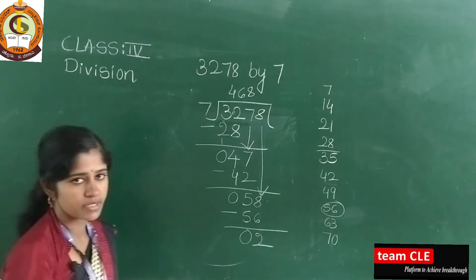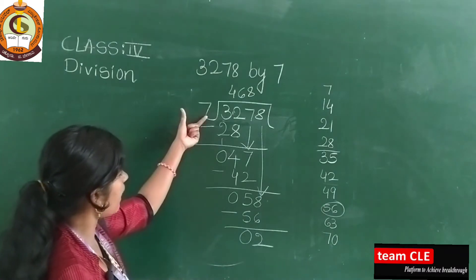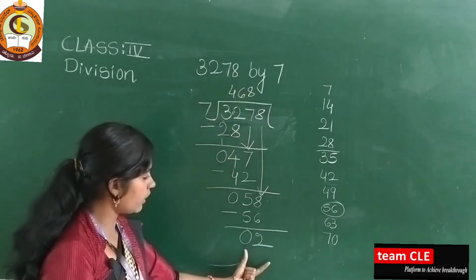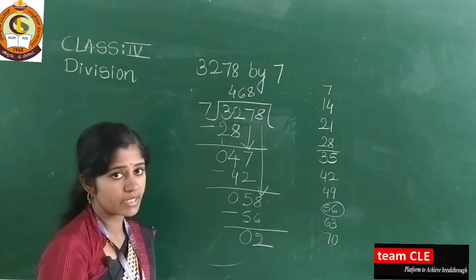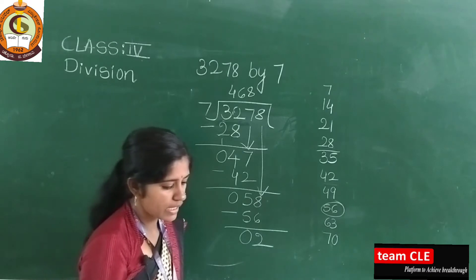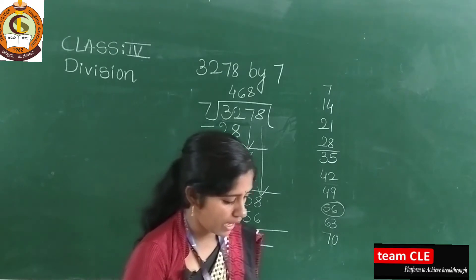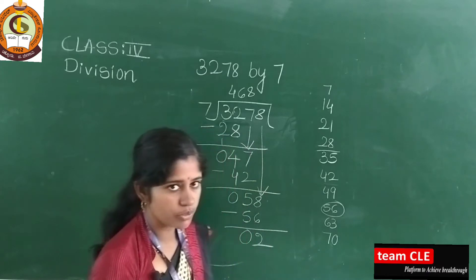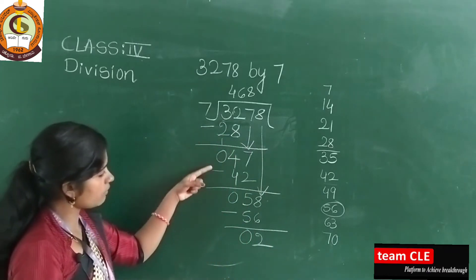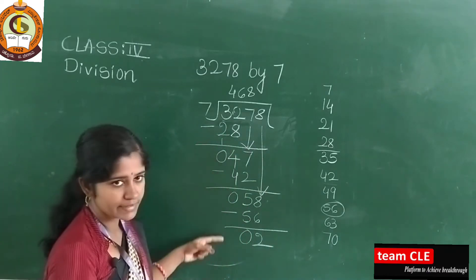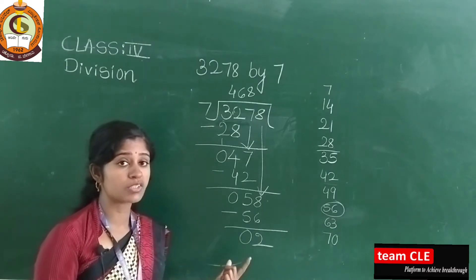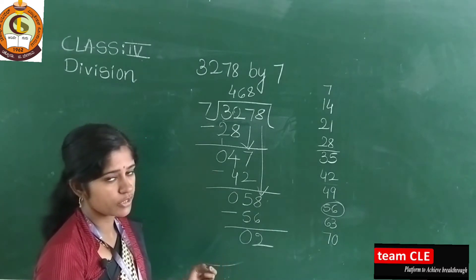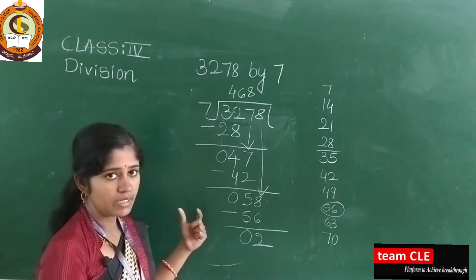Each term has its name: this is the divisor, this is the dividend, this is the quotient, and whatever answer we get at the bottom is the remainder. In multiplication we added, but in division we subtract the number.